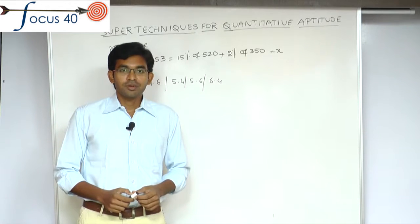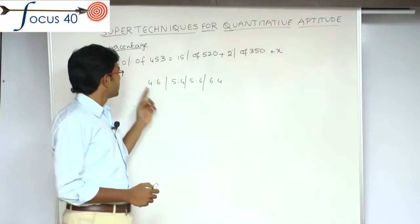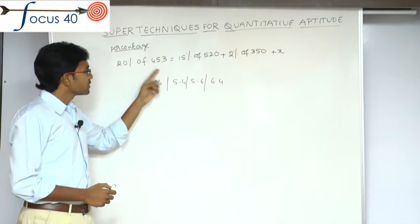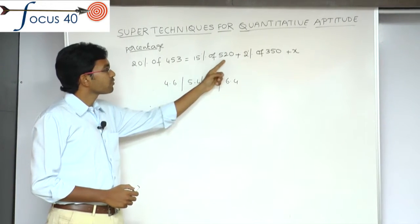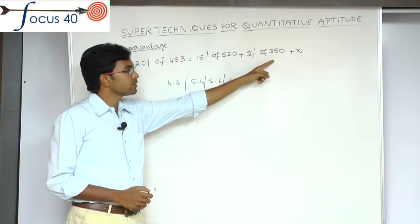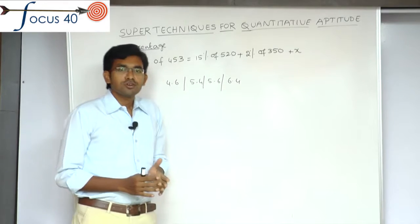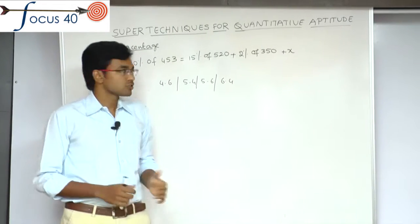Let us see an example on percentages. 20% of 453 equal to 15% of 520 plus 2% of 350 plus x. Let me show you how to solve this question.